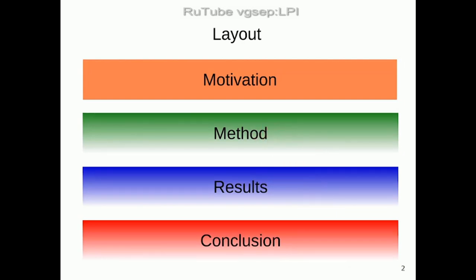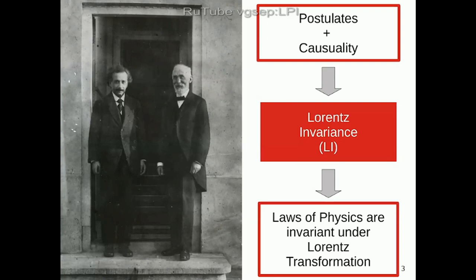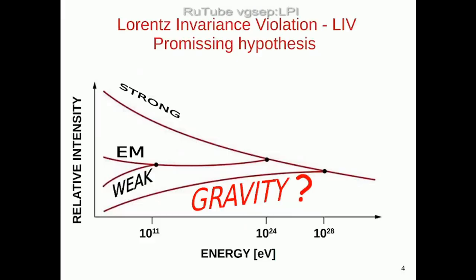As you know, the postulates of relativity plus causality imply Lorentz invariance, which means that the laws of physics are invariant under Lorentz transformation. This by itself would be a reason to test Lorentz invariance, because it's one of the pillars of modern science.